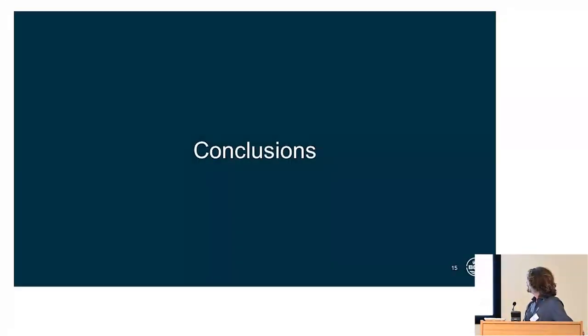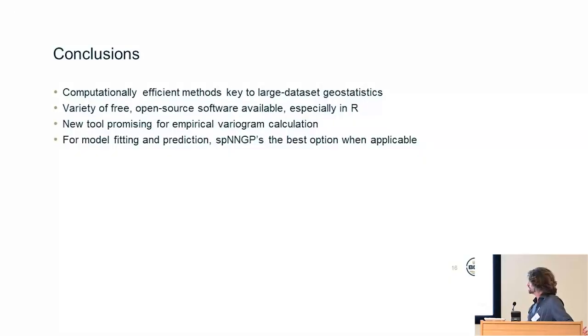So conclusions. We really need computationally efficient methods for large dataset geostatistics. Thankfully, lots of them are available through open source software packages, especially in R. The new tool under development is very promising for calculating empirical variograms. And then for model fitting and prediction, especially in the nearest neighbors Gaussian processes were the most efficient tool that we found.